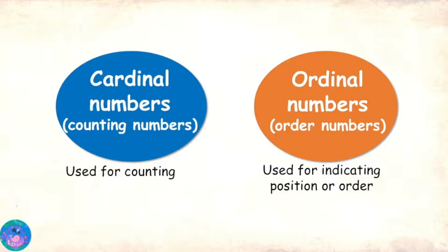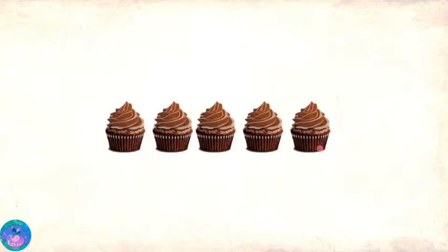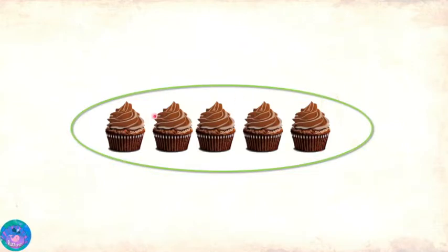I am still a bit confused between cardinal and ordinal numbers. Let me give you an example. We have these cupcakes. Now let's count them. One, two, three, four, five. So the number five tells us how many cupcakes there are. Now look at this cupcake.